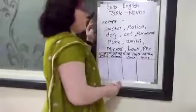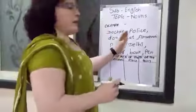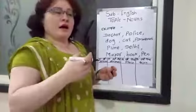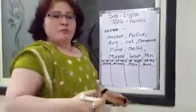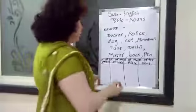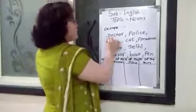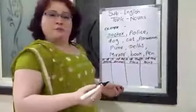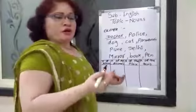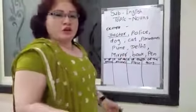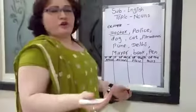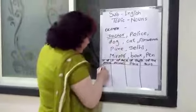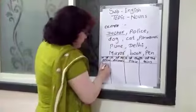Now you can directly identify things, places, animals, and persons. First is doctor — doctor is a person. Doctor is not an animal, not a thing, not a place. So doctor is a person.